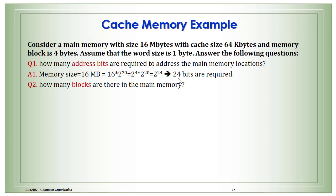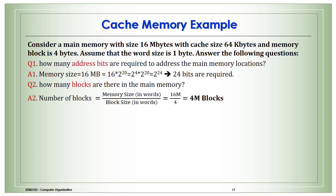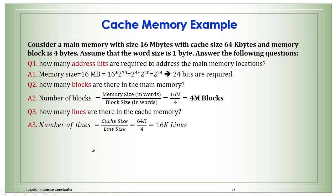Second question: how many blocks are in main memory? Using the formula — memory size in words (16 mega words) divided by block size (4) — gives 4 mega blocks. Third question: how many lines are in the cache? Cache size (64 kilobytes) divided by line size (4, same as block size) equals 16K lines. The cache is always smaller than main memory, so memory locations share cache lines.